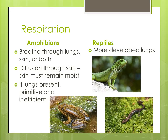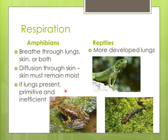Let's look at respiration for both groups. Amphibians breathe through their lungs, their skin, or both — some use more of one or the other. When breathing through their skin, oxygen diffuses through their moist skin, which means the skin must stay wet. If lungs are present, they're small, primitive, and inefficient. Reptiles, on the other hand, no longer breathe through their skin — they have more developed lungs. This picture here is a salamander, showing that moist skin through which gases can diffuse.